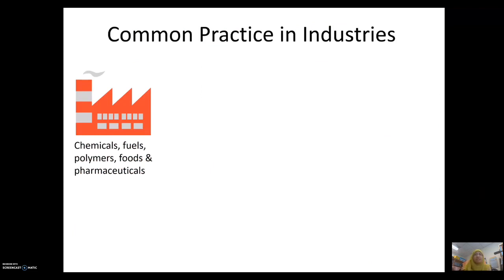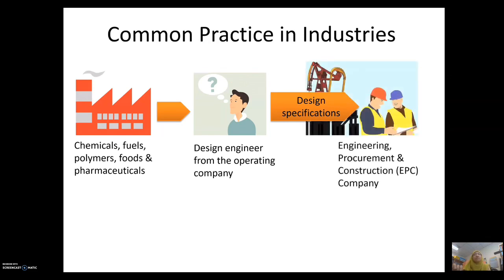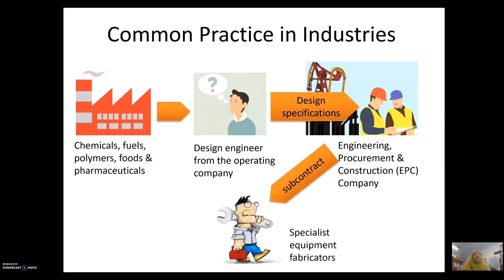Common practice in industry — especially for chemicals, fuels, polymers, and pharmaceuticals — is that, based on the needs of the factory, they calculate according to productivity needs. Then the design engineer will specify the design parameters, and next they will consult with an Engineering Procurement Construction (EPC) company for detailed design. The EPC company will then subcontract to specialist fabricators to design the equipment.